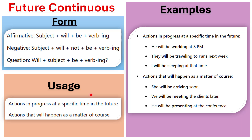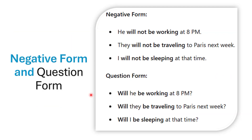For the negative form: 'He will not be working at 8 PM.' 'They will not be traveling to Paris next week.' 'I will not be sleeping at that time.' For questions, take 'he will be working at 8 PM' and make it 'Will he be working at 8 PM?' — just move 'will' before the subject, and 'be' stays after the subject. 'Will they be traveling to Paris next week?' 'Will I be sleeping at that time?'